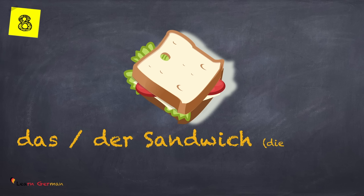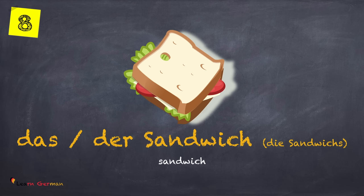Some words in German have two articles, like this one here: das Sandwich or der Sandwich. The plural is die Sandwich — once again, das Sandwich, die Sandwich.